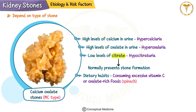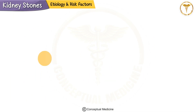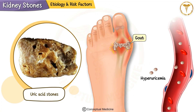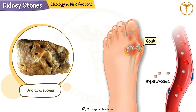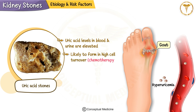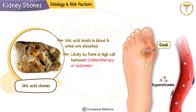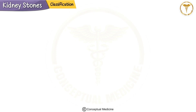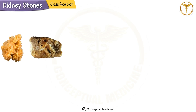Dietary habits like consuming excessive vitamin C or oxalate-rich foods such as spinach can also play a role. In contrast, uric acid stones are linked to conditions like gout and hyperuricemia, where uric acid levels in the blood and urine are elevated. These stones are more likely to form in individuals with high cell turnover, such as during chemotherapy or in leukemia.